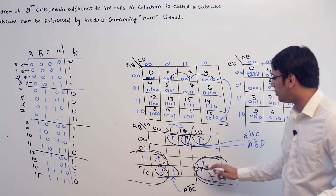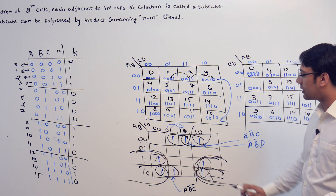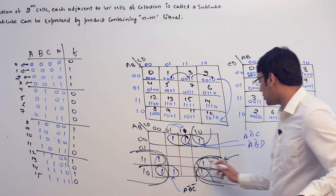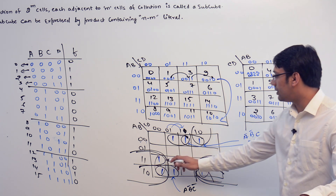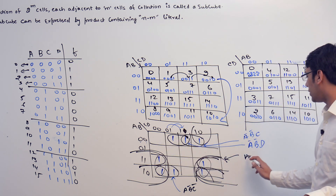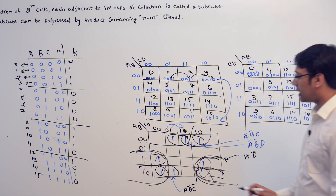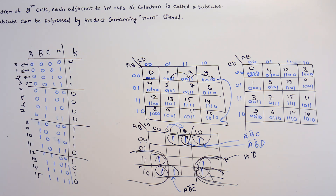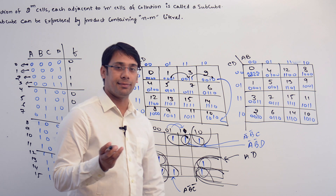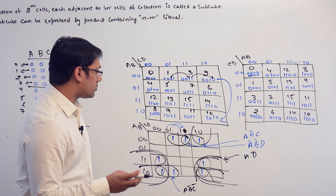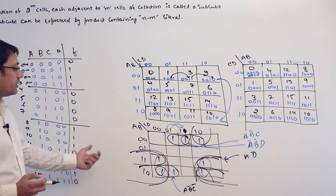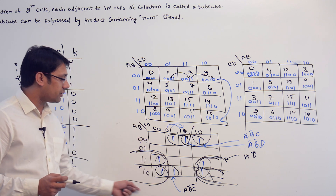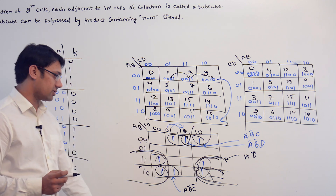We could have made smaller subcubes, but we take the bigger subcube instead. This bigger subcube represents A and D-complement, because A is not changing and D is not changing. To understand why we ignore smaller subcubes, we need to study the concepts of implicants, prime implicants, and essential prime implicants, which we will cover next.